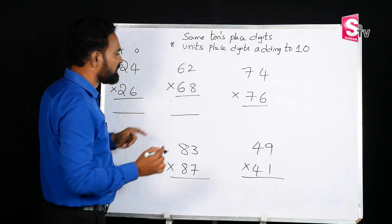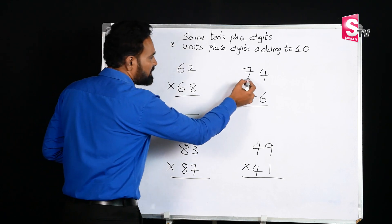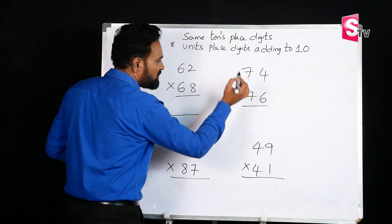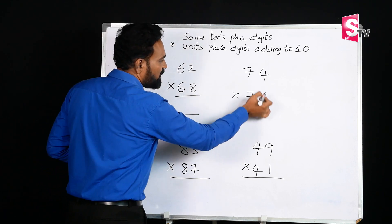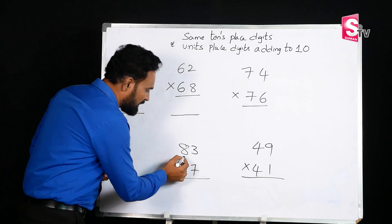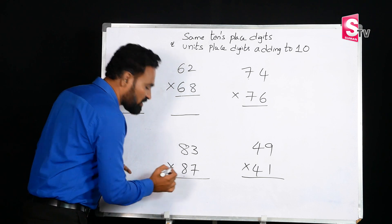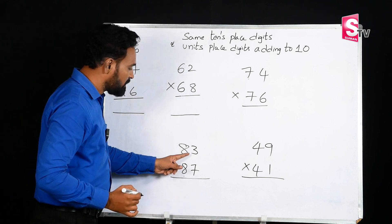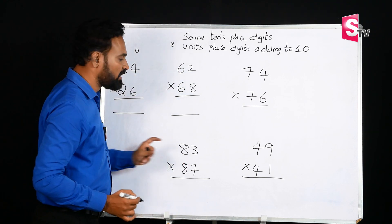For example, 2 plus 8 is 10 — the tens-place digits are the same. And 4 plus 6 equals 10 — again, the tens-place digits are the same and the sum of the unit-place digits is 10.